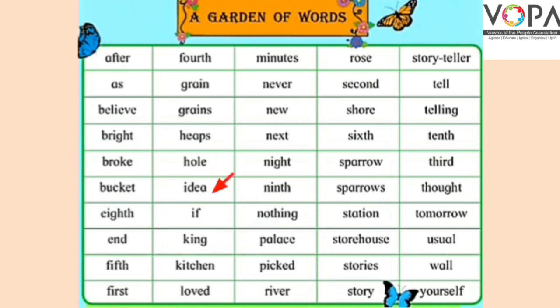'Idea' — i, d, e, a. Idea یعنی ترکیب۔ 'If' — i, f. If یعنی اگر۔ 'King' — k, i, n, g. King یعنی راجہ۔ 'Kitchen' — kitchen میں t silent ہوتا ہے۔ Kitchen یعنی باورچی خانہ۔